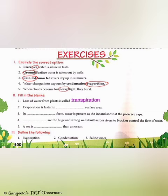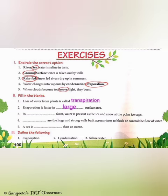Part 2 — Evaporation is faster in blank surface area. The answer is large surface area.